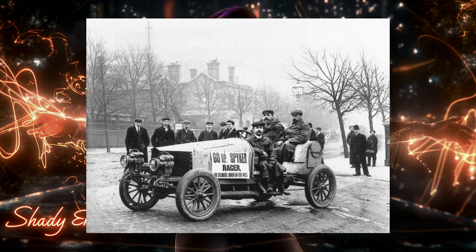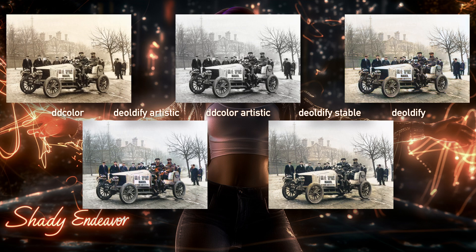This here is the 1903 Spyker 60HP — I'm assuming that's for horsepower — the world's first petrol-fueled four-wheel drive car with a top speed of 80 to 90 miles per hour. For some reason, the models didn't want to give this image much of any color, but one wanted to make it sepia tone for some reason.